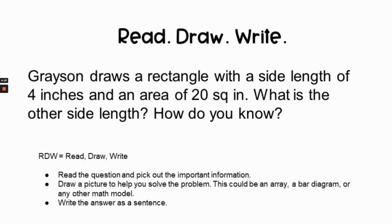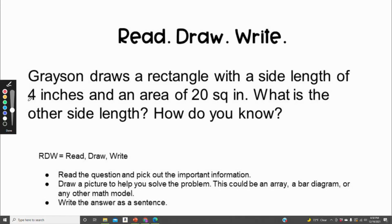Now it's time for your redraw-write practice question. We're going to read the question together, then you're going to pause the video and find the answer on your own. When you're certain of your answer you can look in the description box below to compare your answer to the correct answer. Grayson draws a rectangle with a side length of four inches and an area of twenty square inches. What is the other side length? How do you know? Do your very best work.